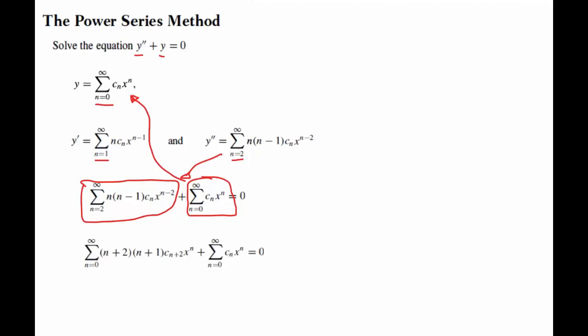And what you should do is bring them down to 0. So as we bring them down to 0, you can see that this one here, n=2 will become n=0. So n becomes n+2, and n-1 becomes n+1.